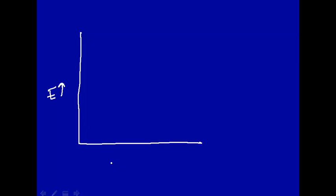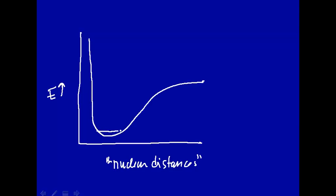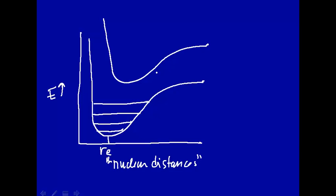To show that, let's draw a potential energy diagram. The potential energy is on the vertical axis, and the horizontal axis is nuclear distances. For a diatomic this would be the bond length, but for a multi-atom molecule it will be some combination of all the nuclear coordinates. Here is the ground state with superimposed vibrational energy states; this is the equilibrium bond distance. The excited state will not necessarily have the same shape or the same equilibrium distance, and it also has vibrational energy levels.